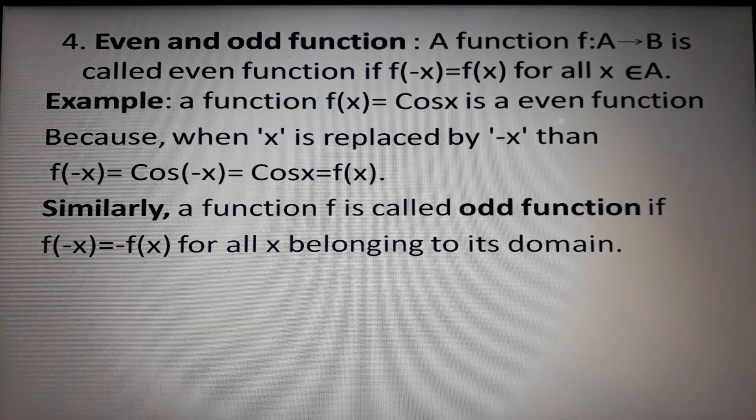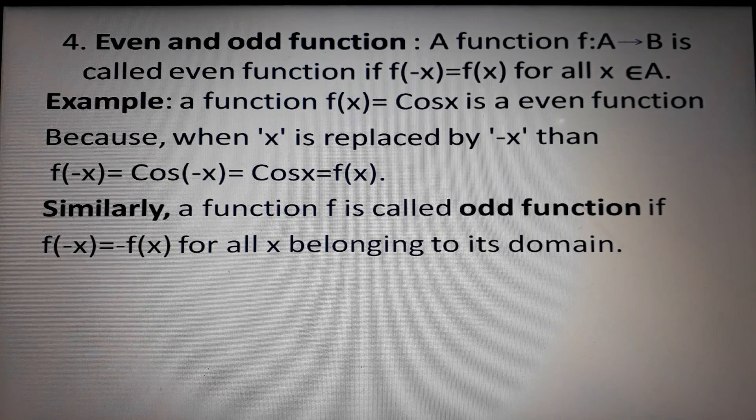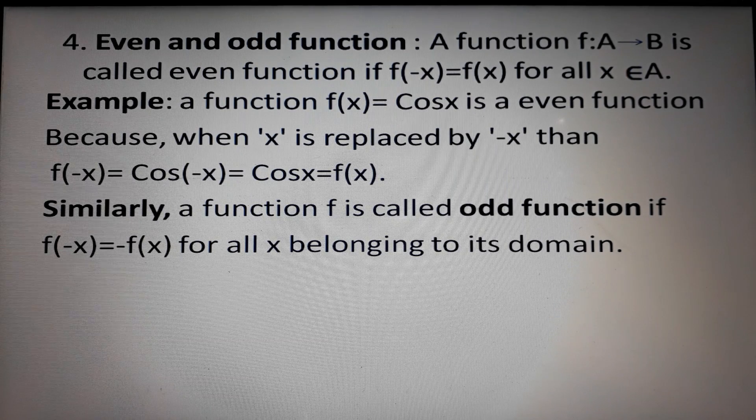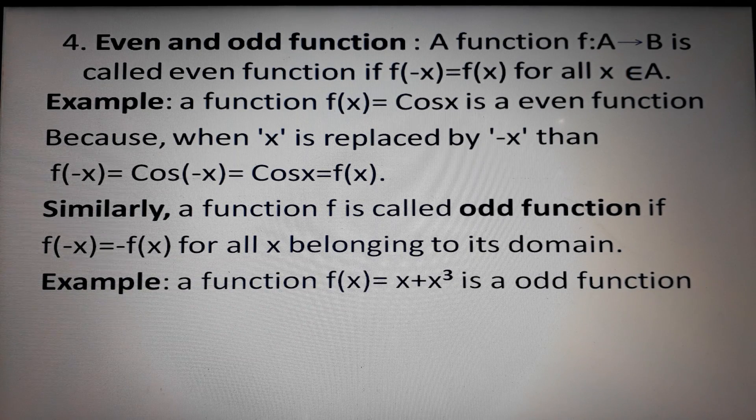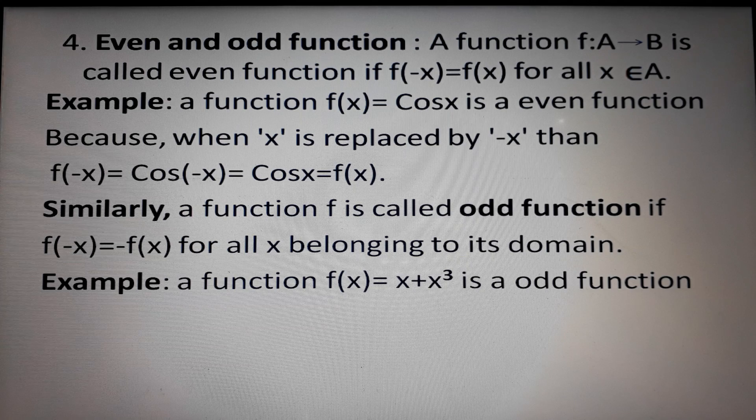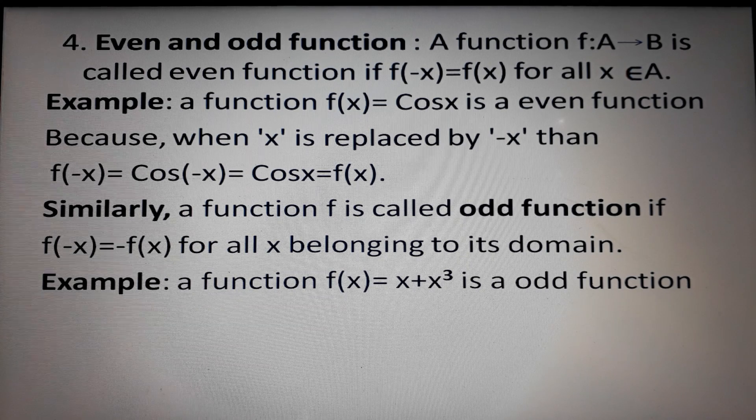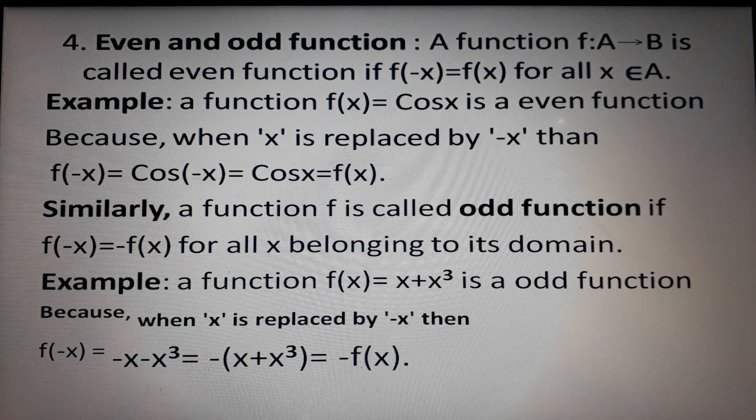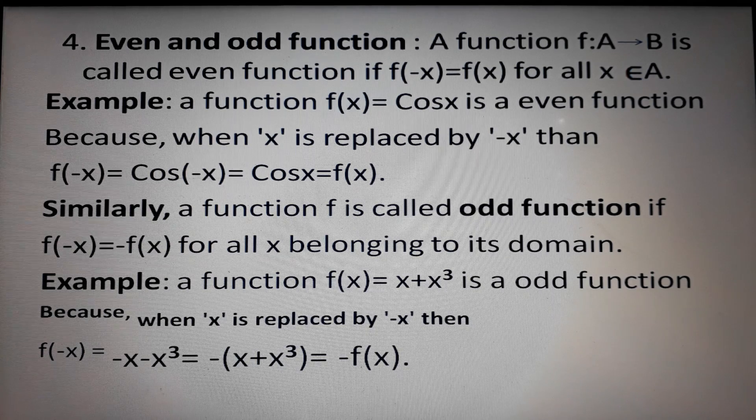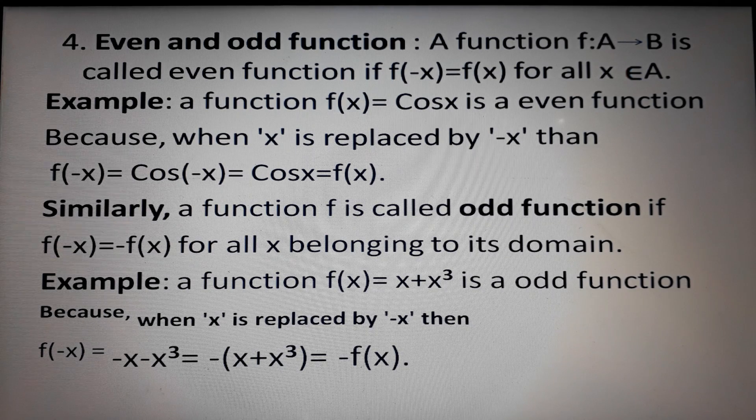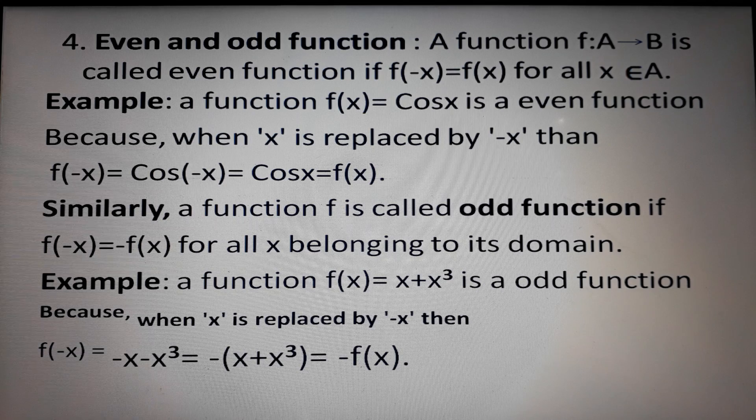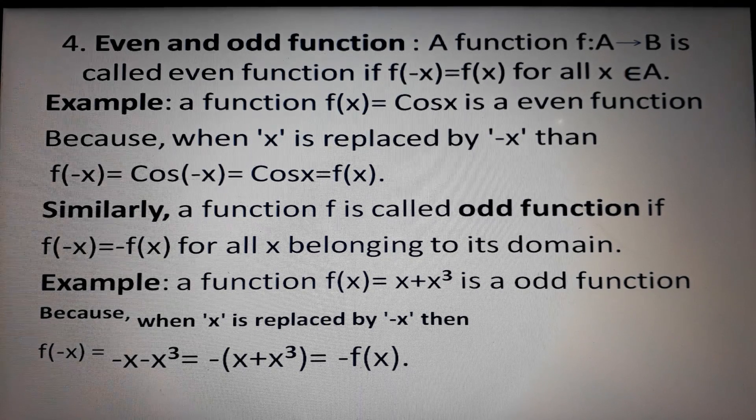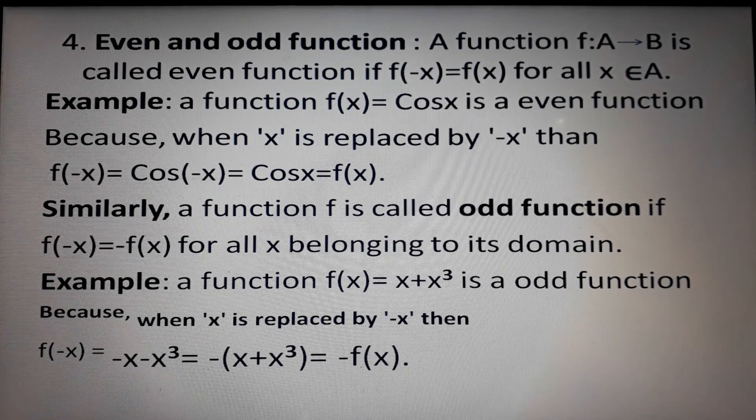Similarly, a function f is called an odd function if f(-x) is equal to -f(x) for all x belonging to its domain. Example: a function f(x) = x + x³ is an odd function because when x is replaced by -x, then f(-x) = -x - x³, and minus is taken common from both terms, then we get f(-x) = -(x + x³) = -f(x). So this function is an odd function. Thank you!